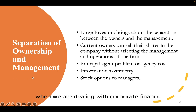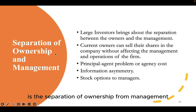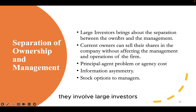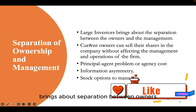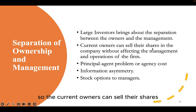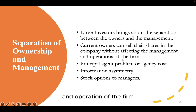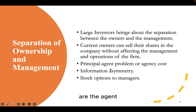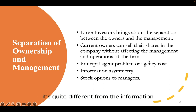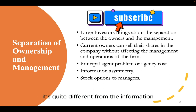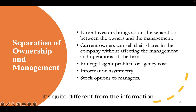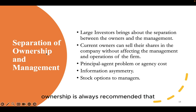An important aspect of corporate finance is the separation of ownership and management. In corporations, large investors create a separation between owners and management, so current owners can sell their shares without affecting the management and operation of the firm. There is always a principal-agent relationship problem, where management are the agents and shareholders are the principal. There is also information asymmetry because the information available to shareholders is quite different from that available to management. To align interests, it is recommended that stock options be granted to managers.